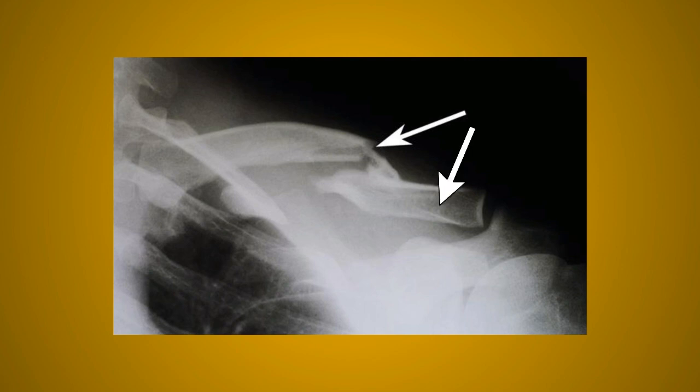In a fracture of the clavicle, the lateral fragment is displaced downwards. This occurs because the trapezius muscle alone is unable to support the weight of the upper limb, causing the lateral one-third of the clavicle to fall downward.